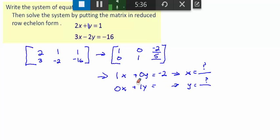And 0x plus 1y equals 5. So, x is negative 2. Right? And y equals 5. So, we have found the solution to our system.